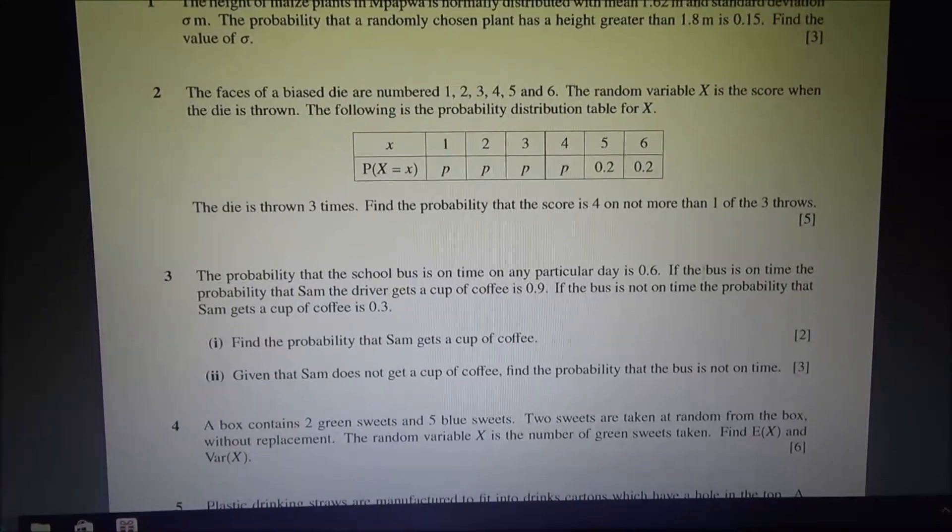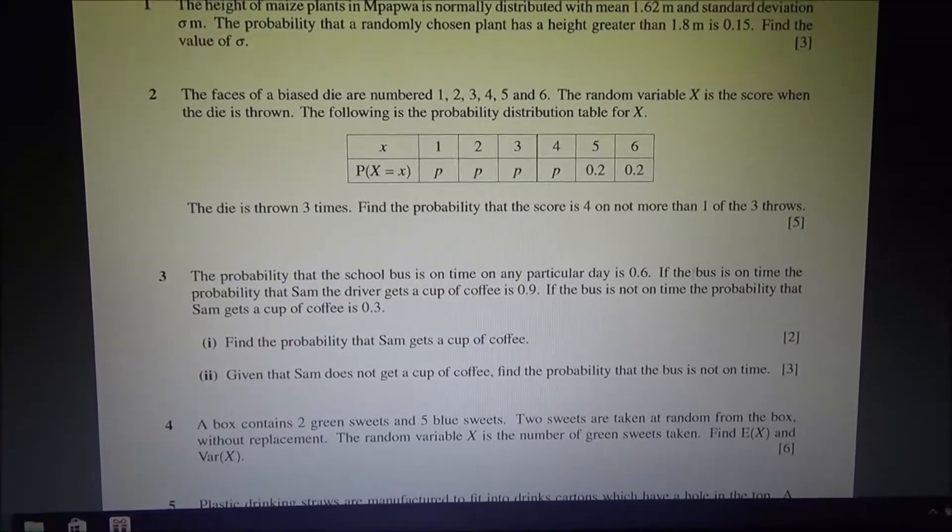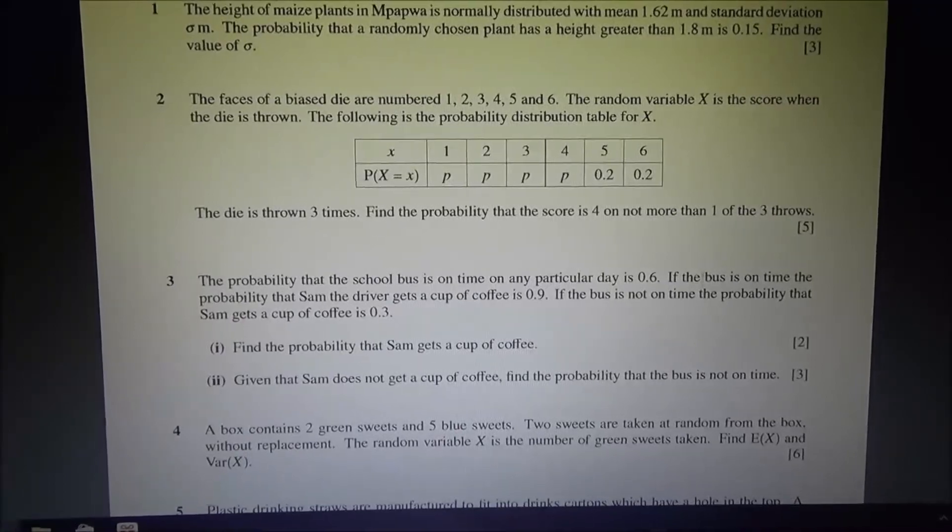Find the probability that the score is 4 on not more than one of the three throws.